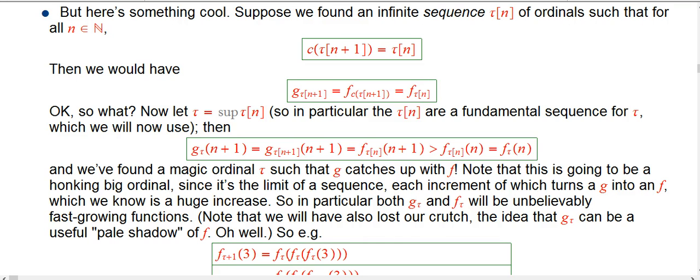At the same time, exactly when we get to tau, we lose this wonderful crutch which we've thrown away on purpose: the idea that g could be a useful pale shadow of f. Because it's not, it's not the same function, but it grows at essentially the same growth rate. As is so often with this kind of stuff, you drive every idea to extinction. You drive it so far that it becomes useless, and then you pick up a new idea.